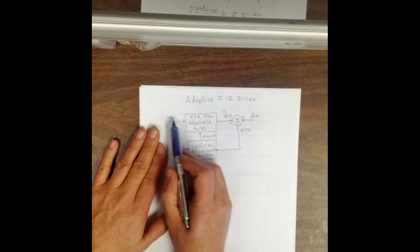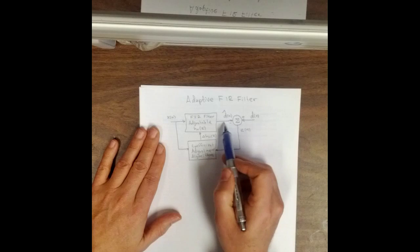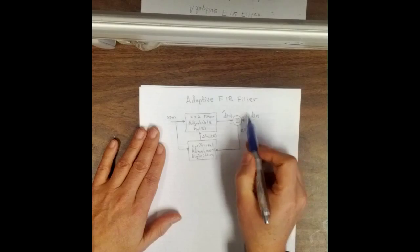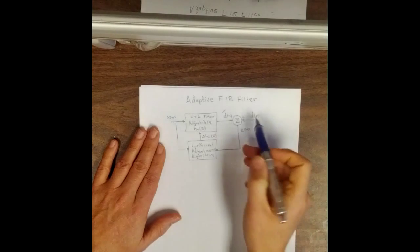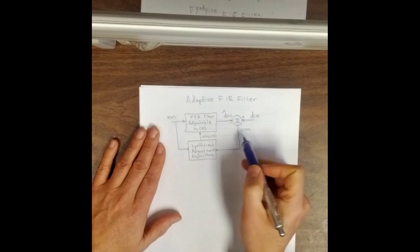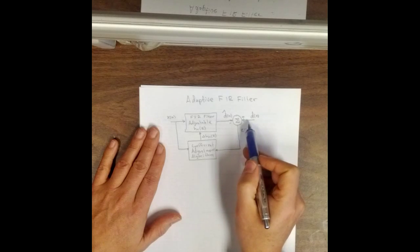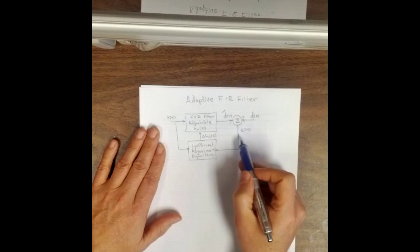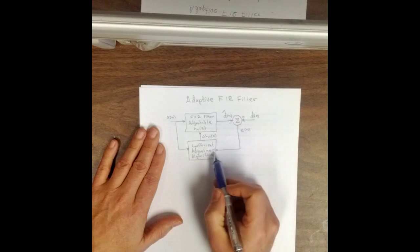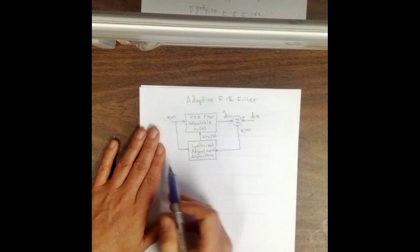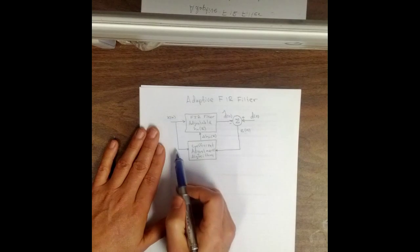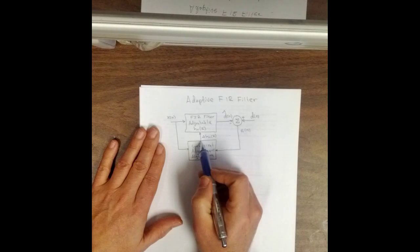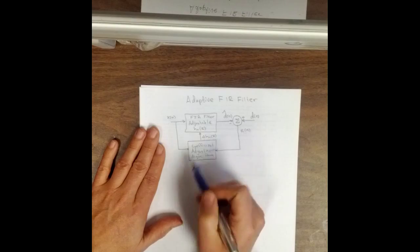We have an input x of n going into the filter and an output d hat of n. We have a desired output d of n that comes into the whole adaptive filter system and the difference between d of n and d hat of n is the e of n or error of n and that error is fed into a coefficient adjustment algorithm along with the input to give us a change in filter coefficients for the next iteration.